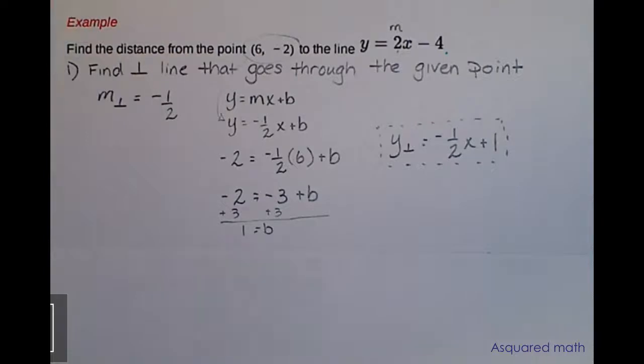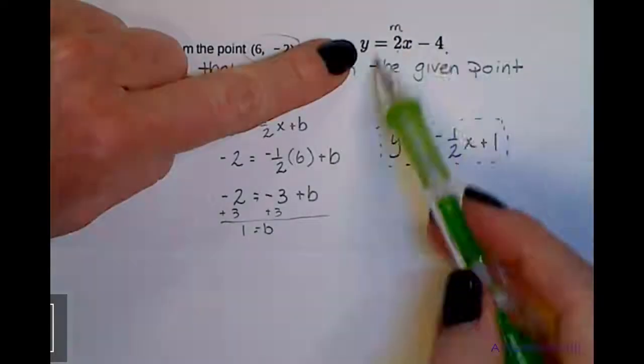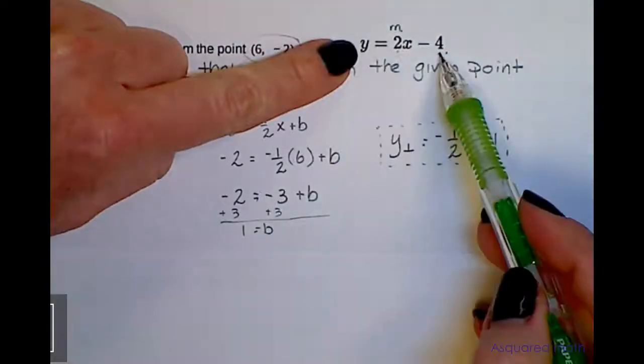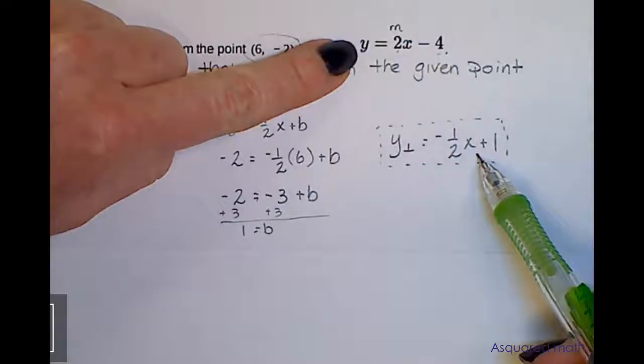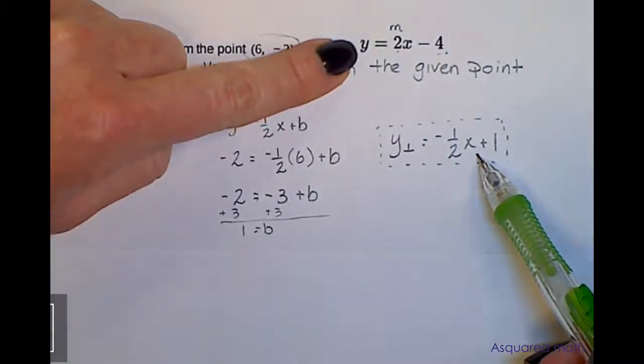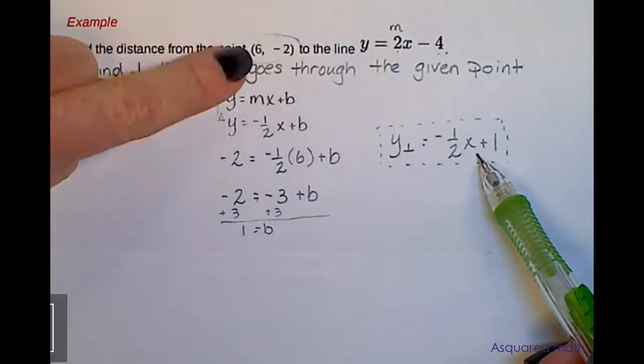The second part is we need to now figure out where the given line and its perpendicular intersect. Once we figure out where they intersect, then we have a second point to work with our distance formula.